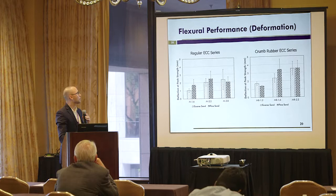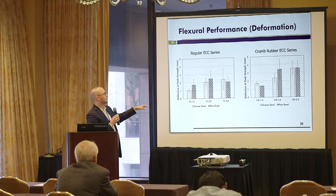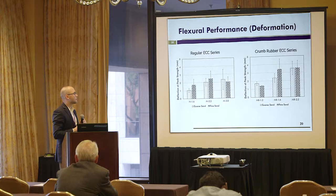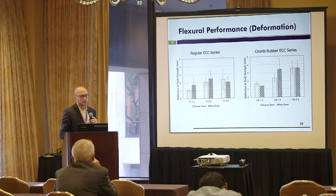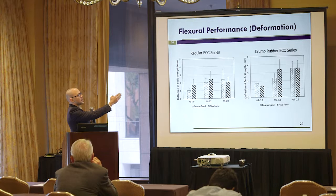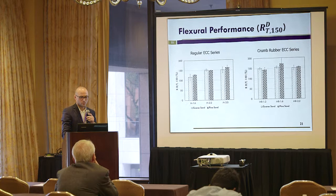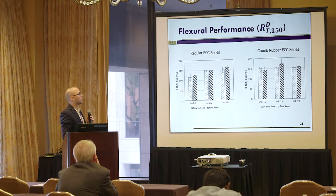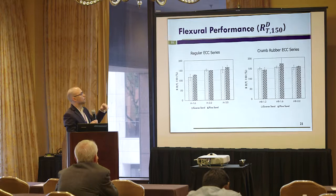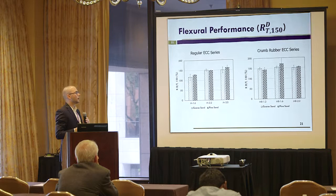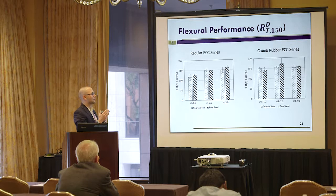In terms of deformation capacity, there is an increasing trend with higher fly ash content for the regular ECC series. A very similar phenomenon is observed in the crumb rubber series. However, compared to regular ECC, the crumb rubber series shows much greater deformation capacity. For the equivalent flexural strength ratio, a similar ascending trend is observed — higher fly ash content yields a better equivalent flexural strength ratio. This trend is less visible for the crumb rubber series.